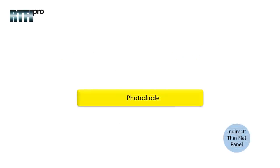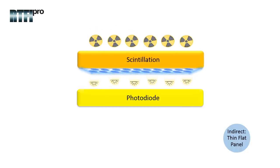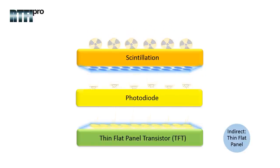The photodiode layer is composed of amorphous silica, which converts light photons into electric charge. The electric signal is then transferred to the thin flat panel transistor, or TFT.